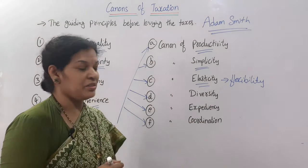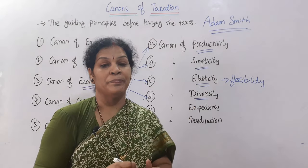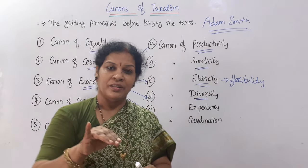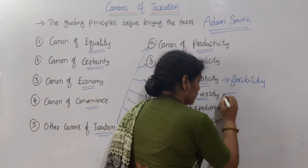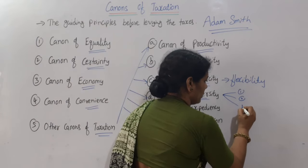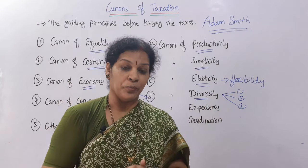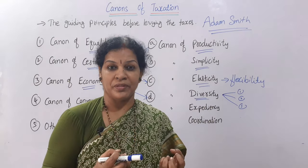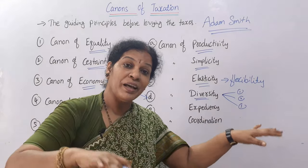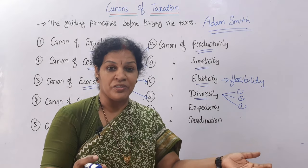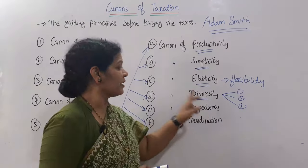The next canon is the canon of diversity. This means taxation should be diversified — wherever possible, tax should be charged in different ways through different policies. Different methods allow the government to cover all kinds of people, especially higher income group people, from multiple angles. That is the canon of diversity.